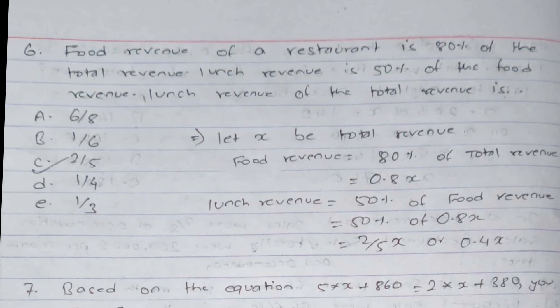Question 6: Food revenue of a restaurant is 80% of total revenue; lunch revenue is 50% of food revenue. What is the lunch revenue as a fraction of total revenue? Let total revenue = x. Food revenue = 0.8x. Lunch revenue = 50% of 0.8x = 0.4x = 2/5 x. Therefore the correct answer is 2/5, which is option C.